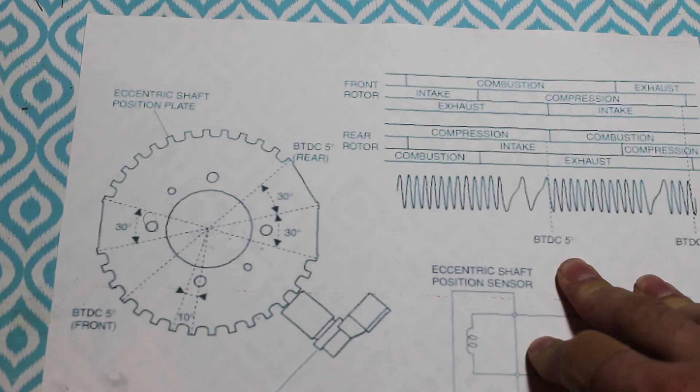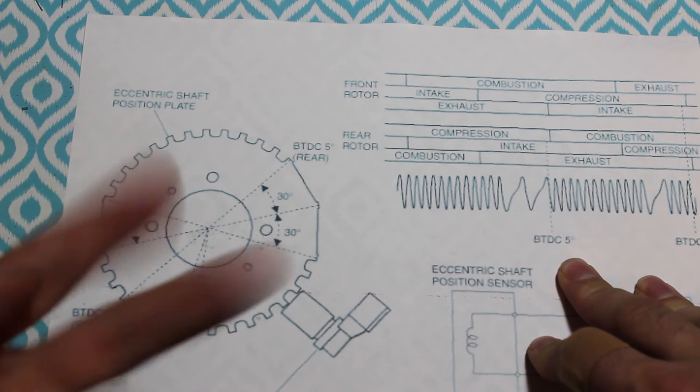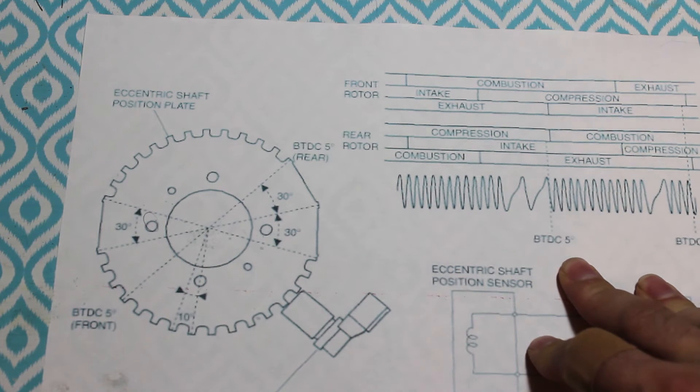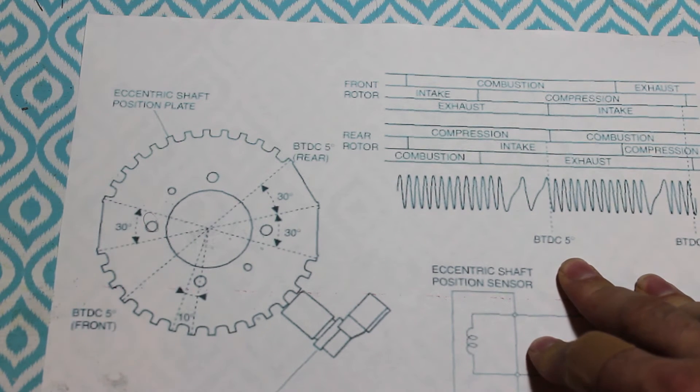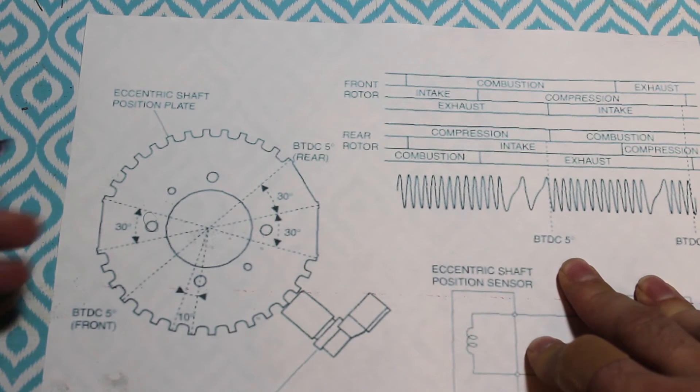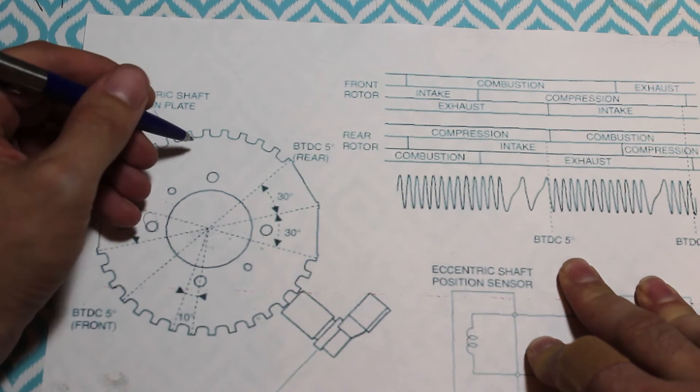But since this is a rotary, that would move both the leading and trailing advance by the same amount. Since the plugs are different and they do different things, I want to advance them differently under different conditions. So I came up with a different solution.